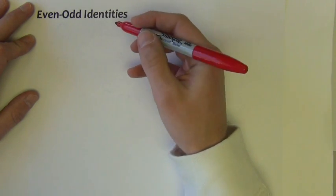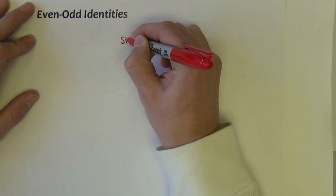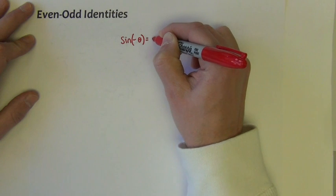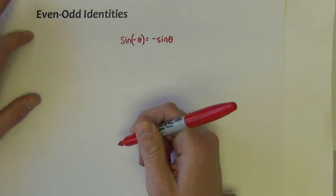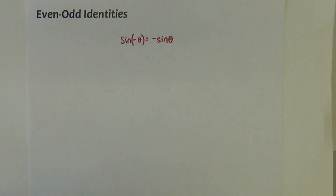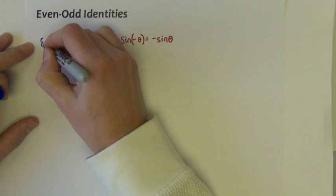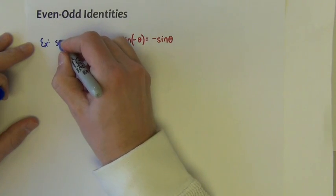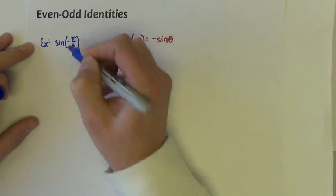So here's the first one we'll prove together. It says that the sine of negative theta equals negative sine theta. So how could we illustrate that? How could we show that that is in fact true? Let's just kind of do it with an example. Let's say I wanted to know what the sine of negative pi over 6 was.